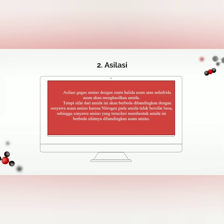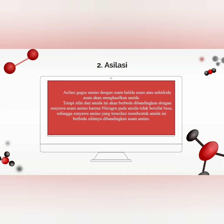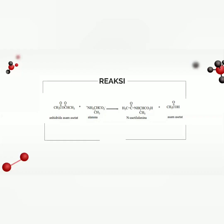Reaksi yang kedua yaitu asilasi. Asilasi gugus amino dengan suatu halida asam atau anhidrida asam akan menghasilkan amida. Tetapi sifat dari amida ini akan berbeda dibandingkan dengan senyawa asam amino, karena nitrogen pada amida tidak bersifat basa. Sehingga senyawa asam amino yang terasilasi membentuk amida ini berbeda sifatnya dibandingkan asam amino. Reaksi asilasi: anhidrida asam asetat direaksikan dengan alanina akan menghasilkan N-asetil alanina dan asam asetat.